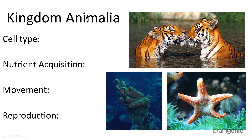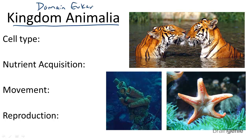The Kingdom Animalia contains living things that are also organized in the domain Eukarya, meaning their cell types are all eukaryotic. This means that animals all have cells, or are made of cells, with a nucleus and membrane-bound organelles, and that are large and complex.